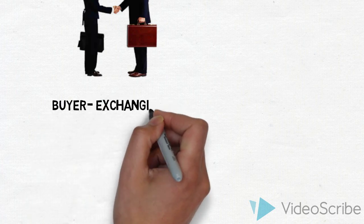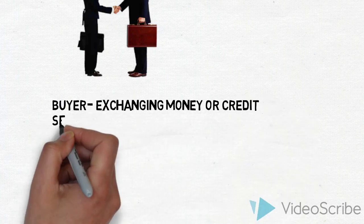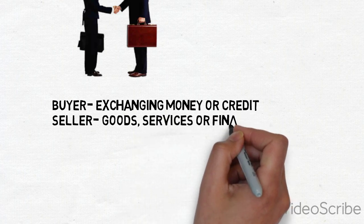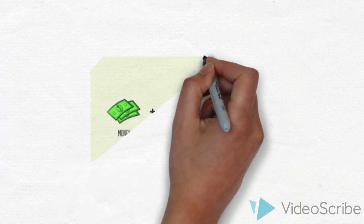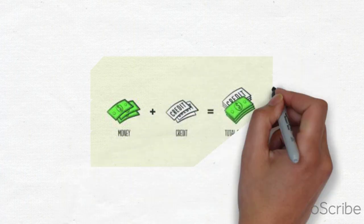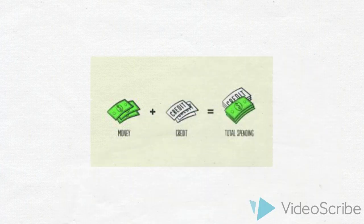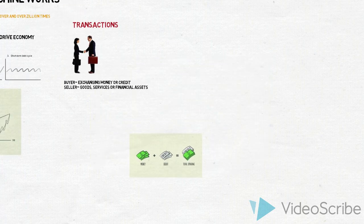Where buyer exchanging money or credit, and seller exchanging goods, services or financial assets. Credit is just like money. So adding together money spent plus credit spent, we get total spending.